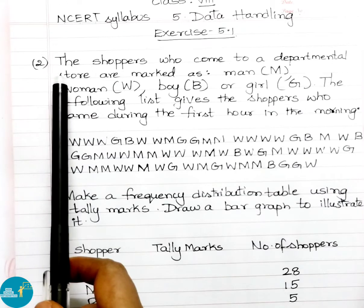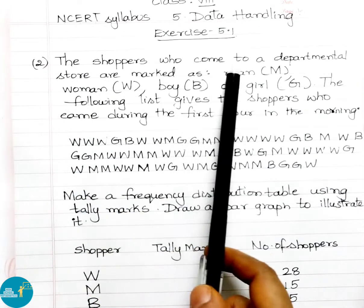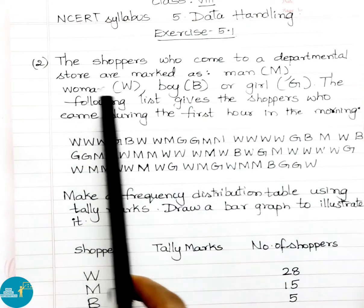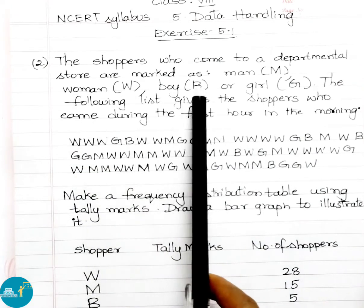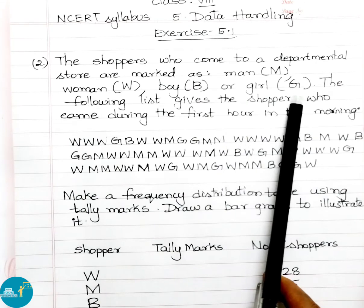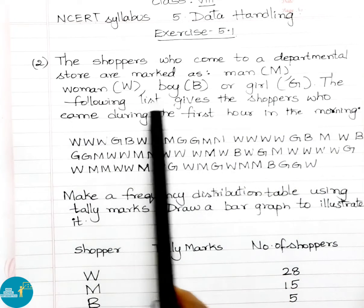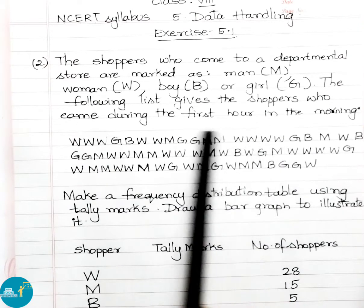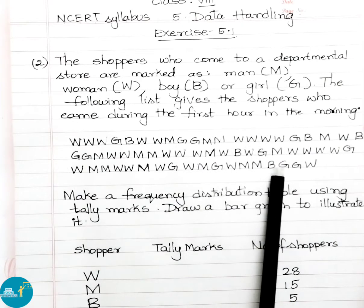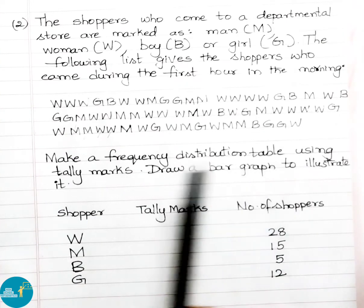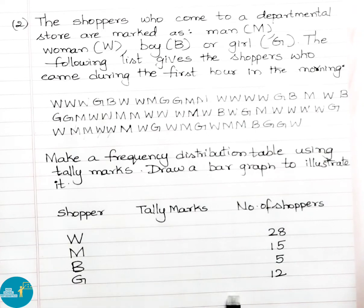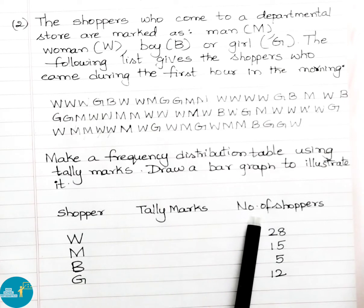Question number 2. The shoppers who come to a departmental store are marked as man (M), woman (W), boy (B), or girl (G). The following list gives the shoppers who came during the first hour in the morning. Make a frequency distribution table using tally marks and draw a bar graph to illustrate it. The frequency distribution table has three columns: shoppers, tally marks, and number of shoppers.